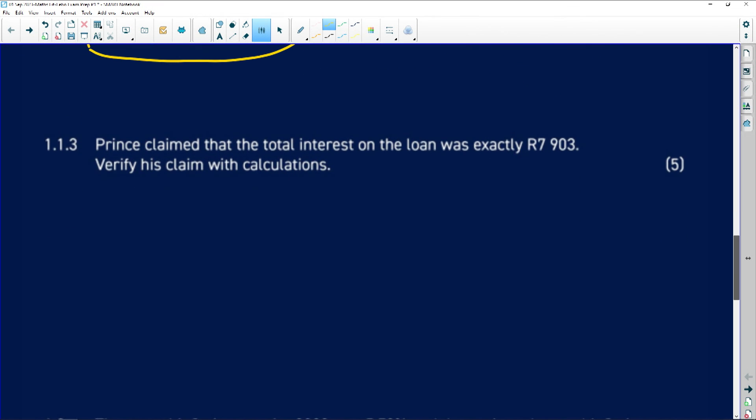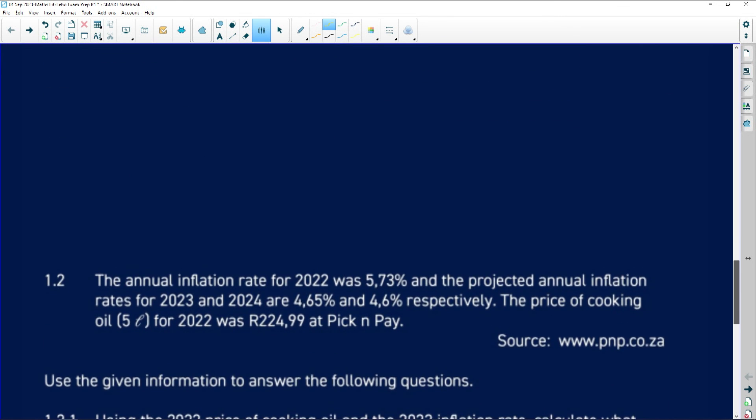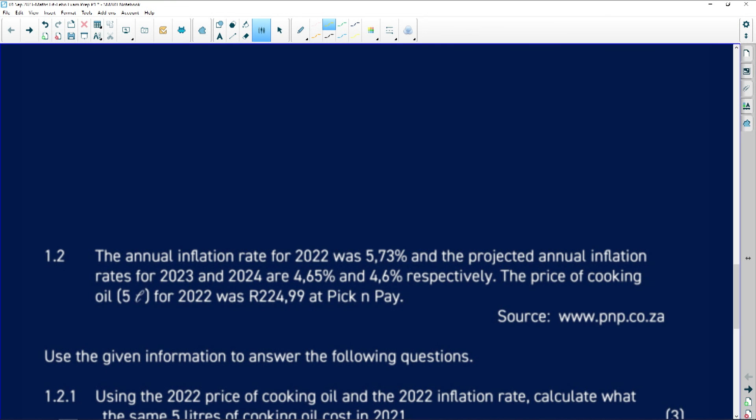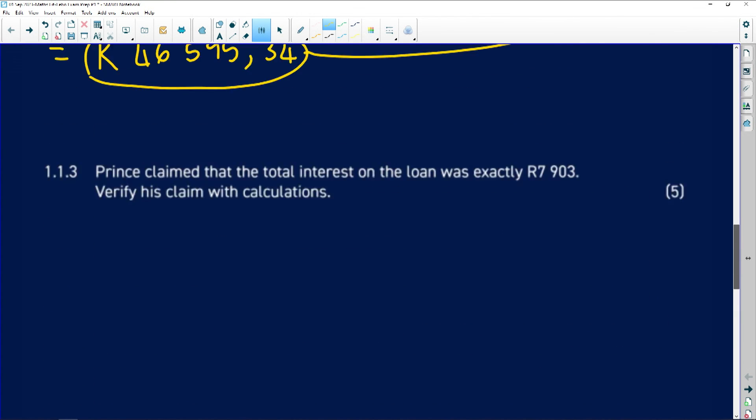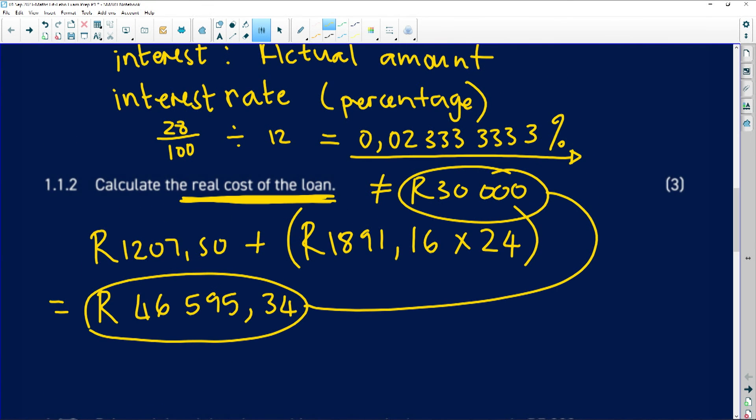And then it says here, Prince claimed that the total interest on the loan was exactly 7,903. Verify using calculations. So in this particular case, all you are doing is calculating the interest on the loan, which is the subtraction, which is not a big issue when it comes to learners and whatever it is that we are doing in terms of interest.